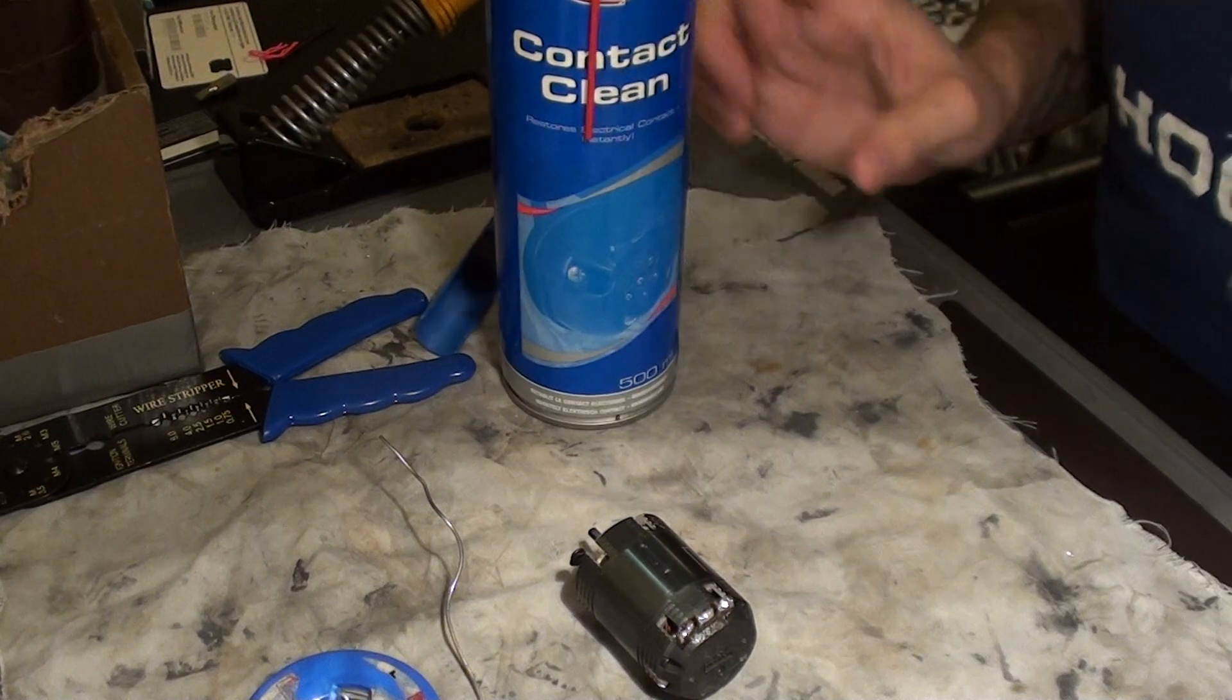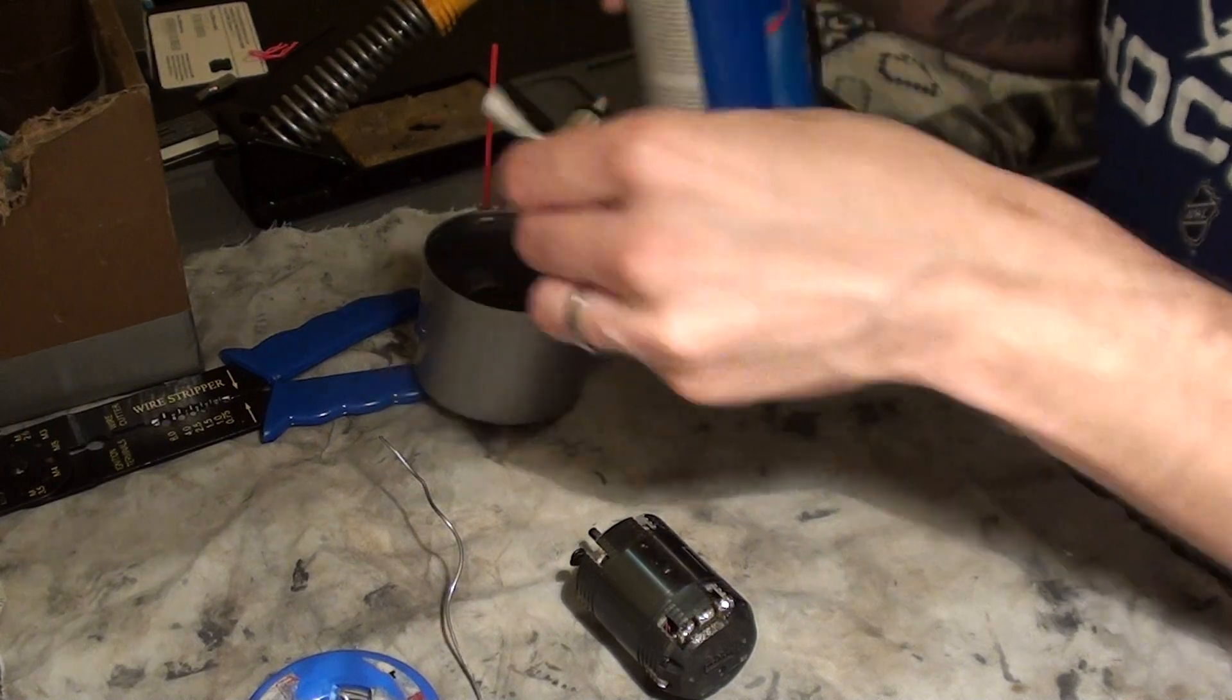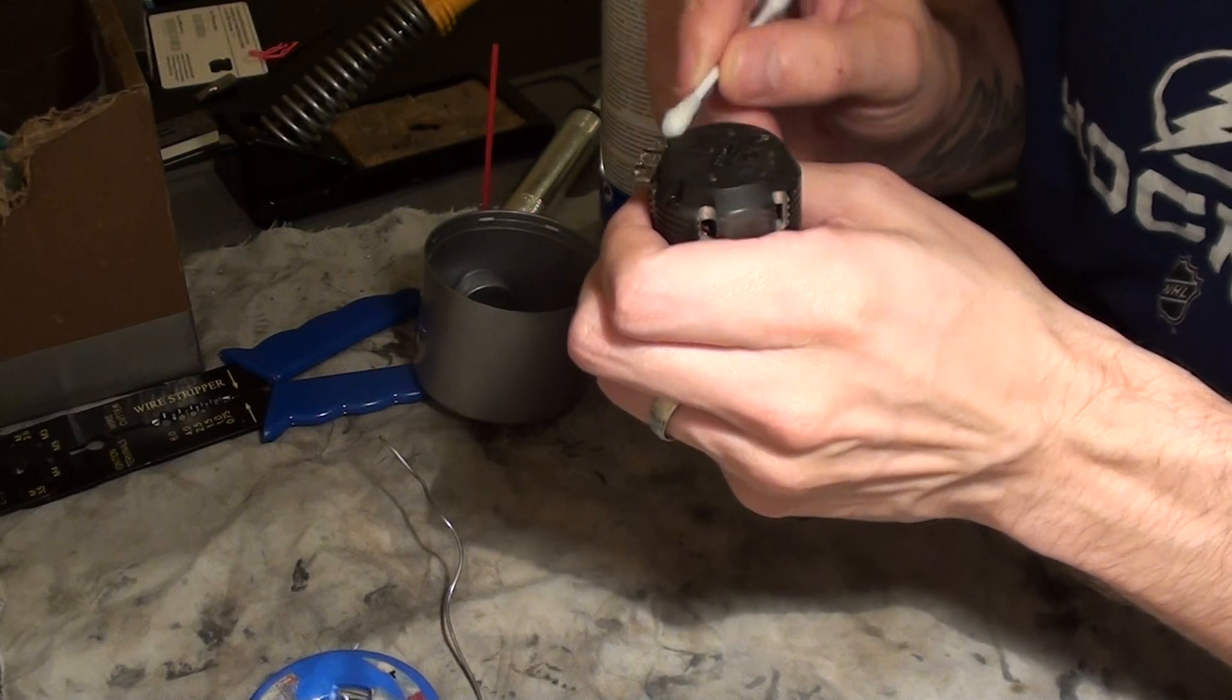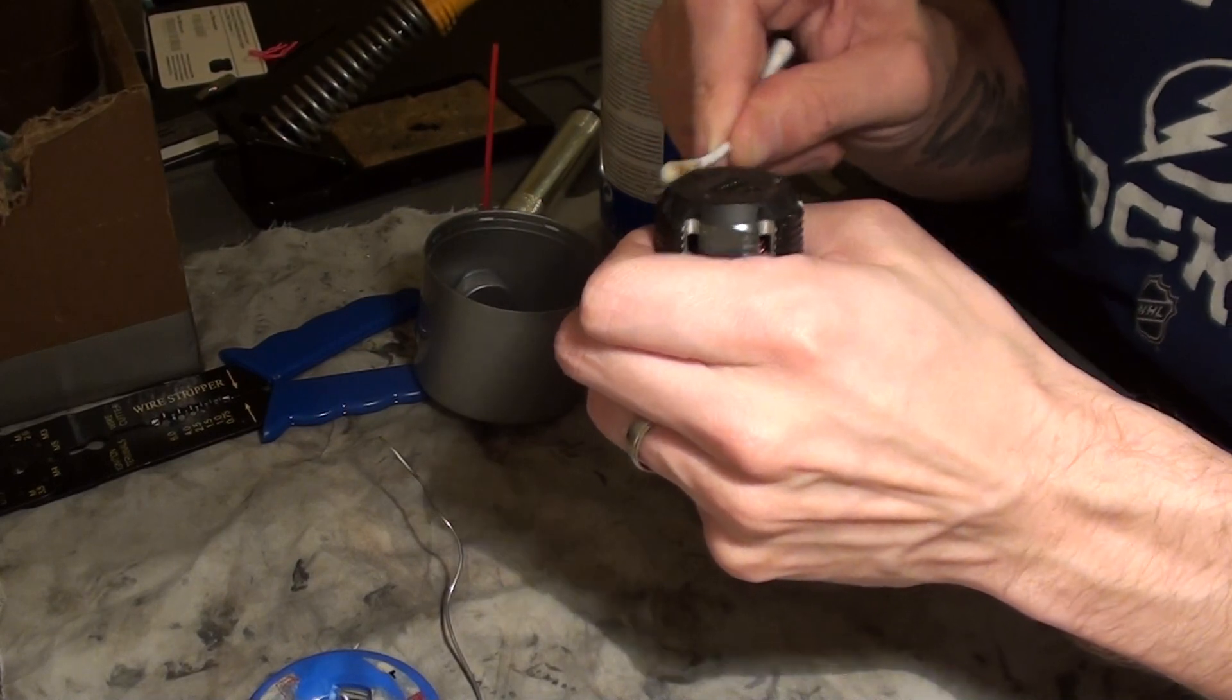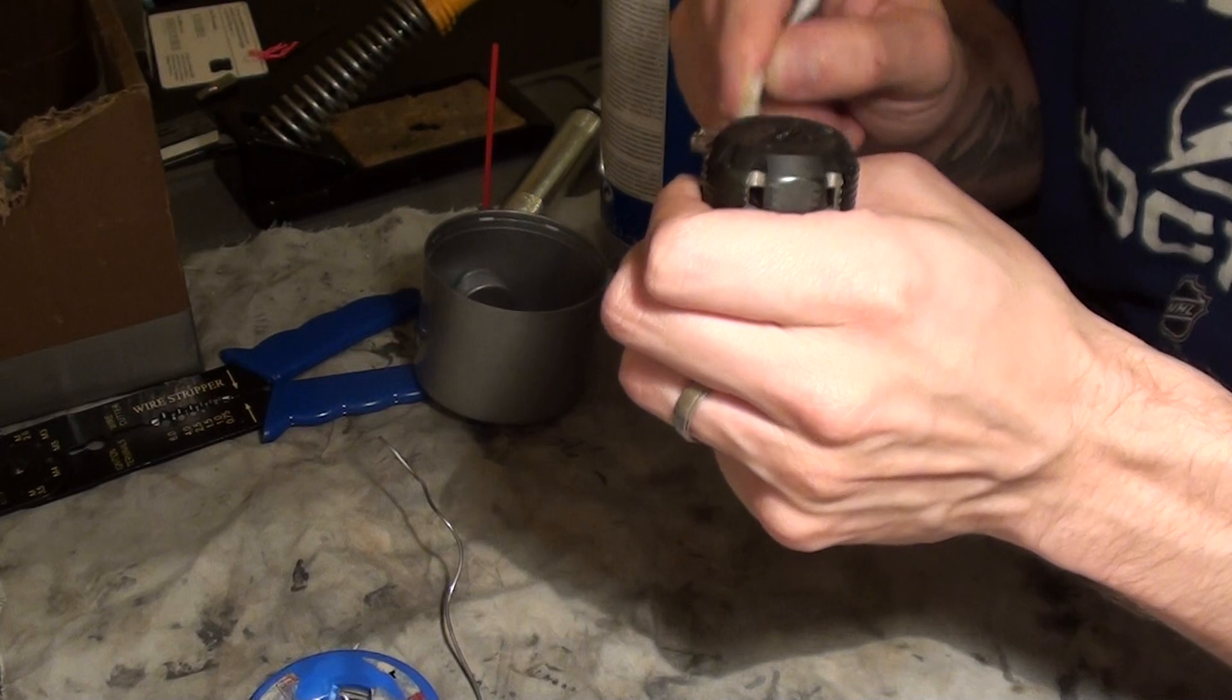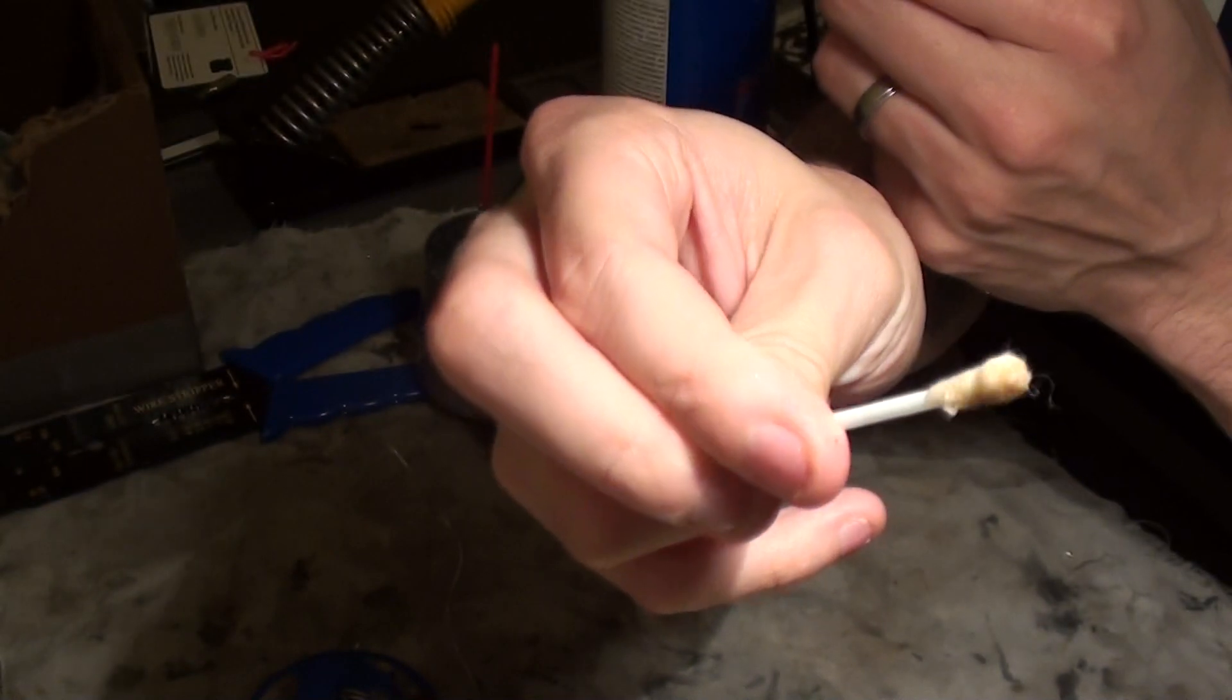Get your contact cleaner. Just a little bit on a cotton bud. And just clean around those contacts. That brings them up nice. You've got a perfectly clean work surface to start with. See the color that comes off it from all the old solder and the flux.